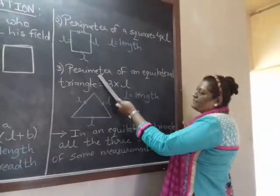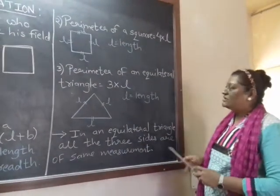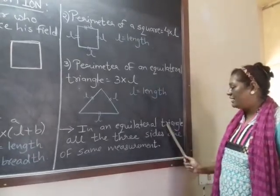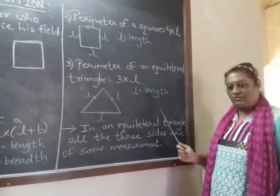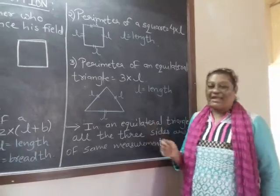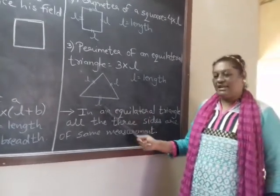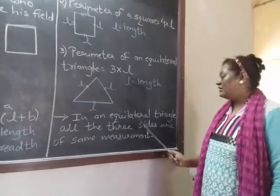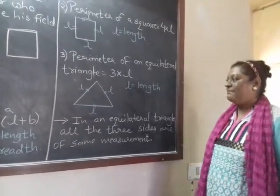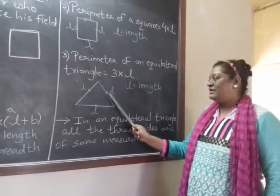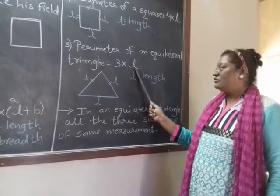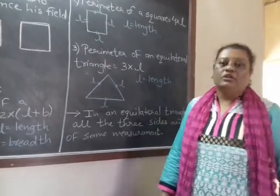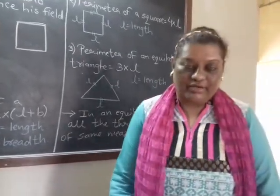And third one, perimeter of an equilateral triangle. What do you mean by an equilateral triangle? Equilateral triangle means where all the three, you know a triangle, why it is called tri-angle? Because it is having three sides or three angles. So in an equilateral triangle, all the three sides are having the same measurement. So there are three sides, so 3 into L, that is length. Hopefully, this is clear to you. Coming on to exercise 10.1.